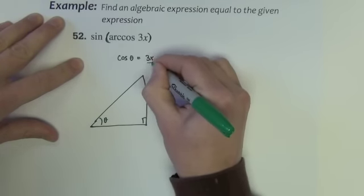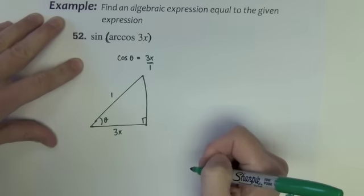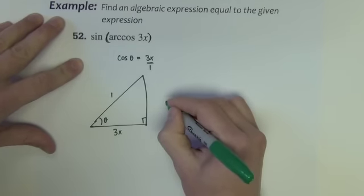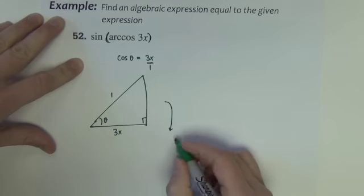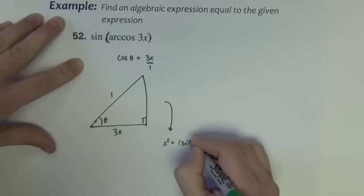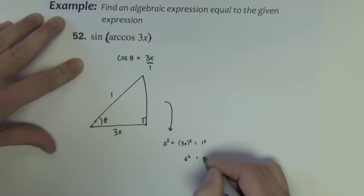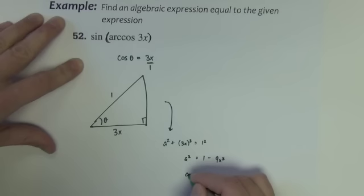So the right triangle that shows that. Cosine is adjacent divided by hypotenuse, 3x and 1. This side here would come from Pythagorean's theorem, a squared plus 3x squared equals 1 squared. So a squared would be 1 minus, I'm going to move this over, 9x squared. So a is the square root 1 minus 9x squared.